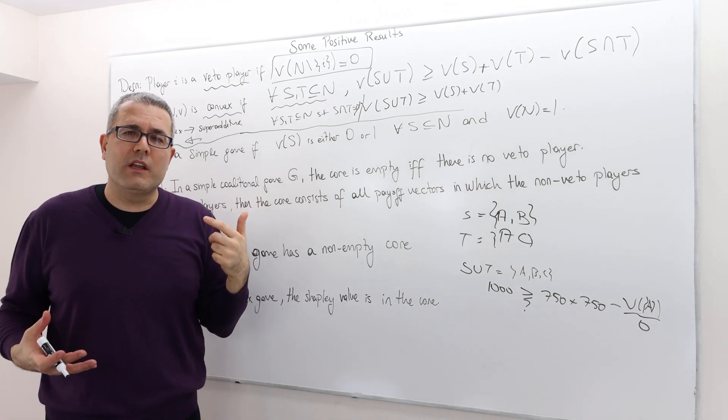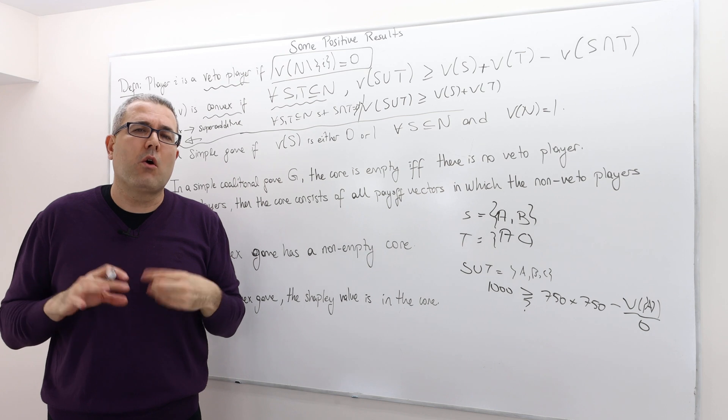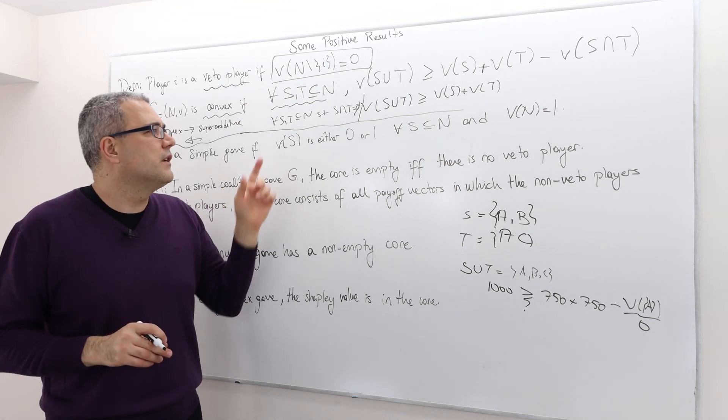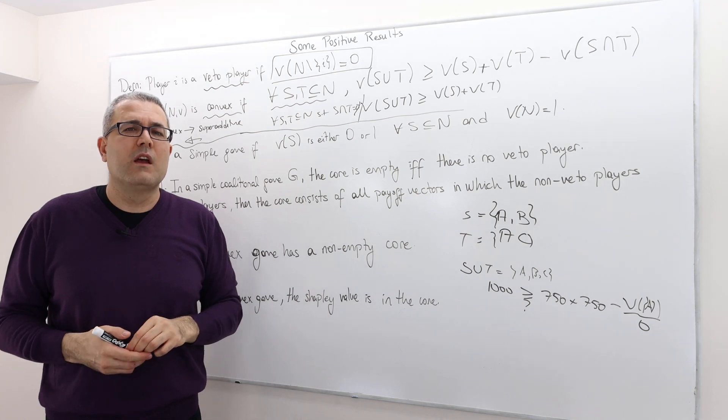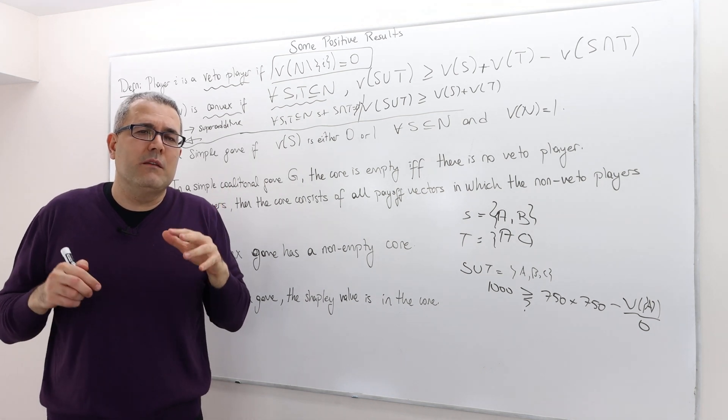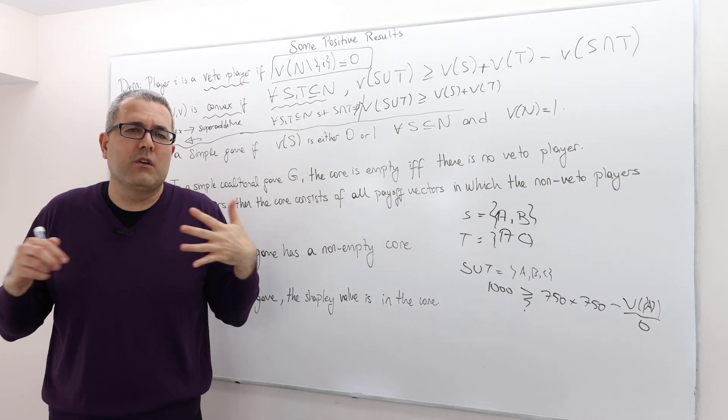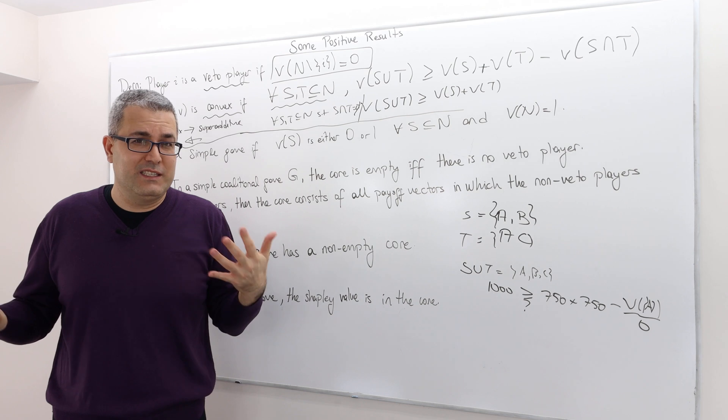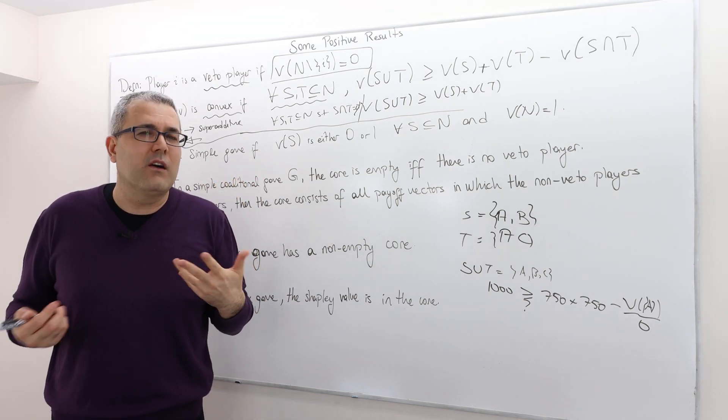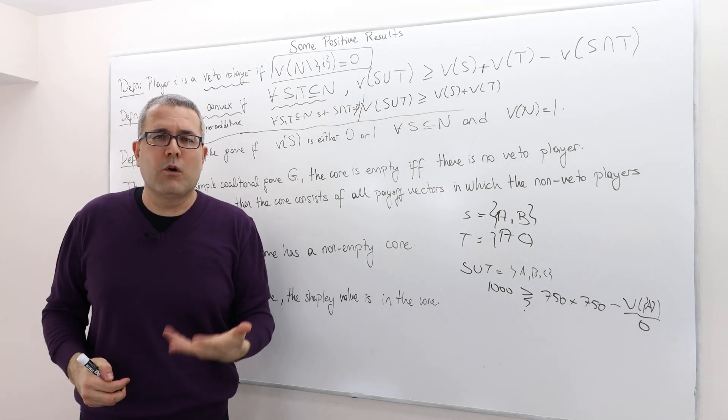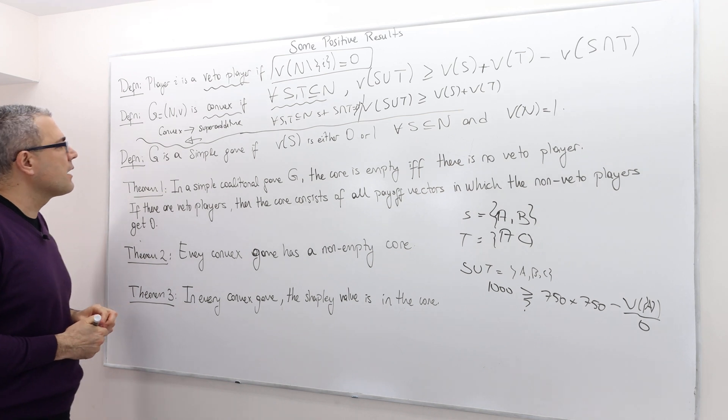I mean, it may sound weird, but actually the voting games or sort of mini coalitional games in sort of political environments do actually have this property because all it matters is winning the majority. And so once you get the majority, the value is 1. But if you don't get the majority, the value is 0. And there might be different ways of getting majority. All right? So it makes sense in a way, in a voting environment, these games are sort of important.